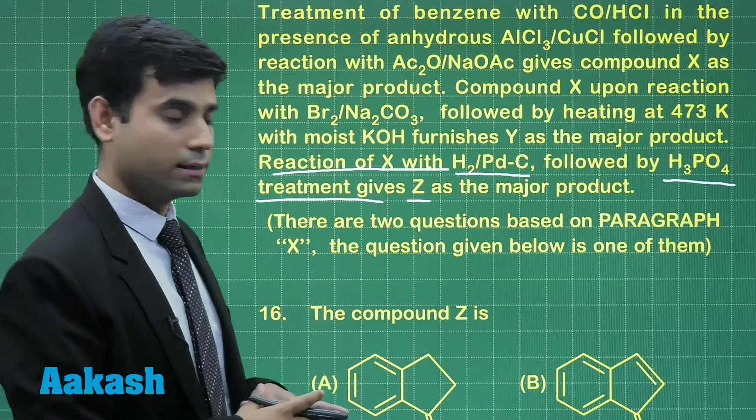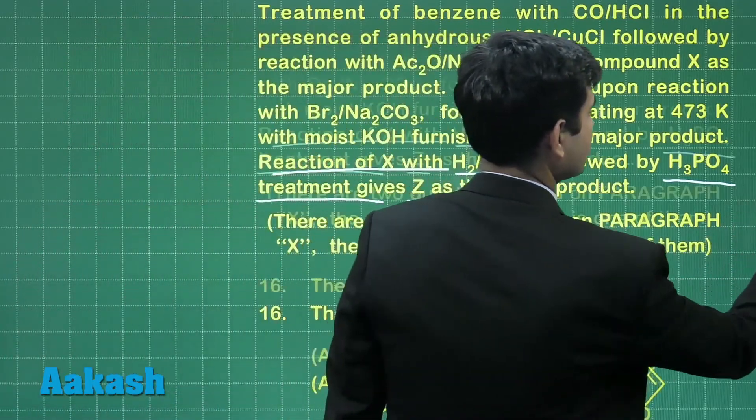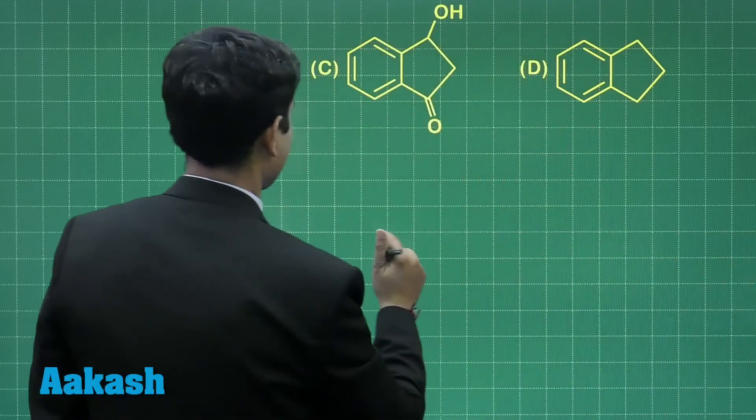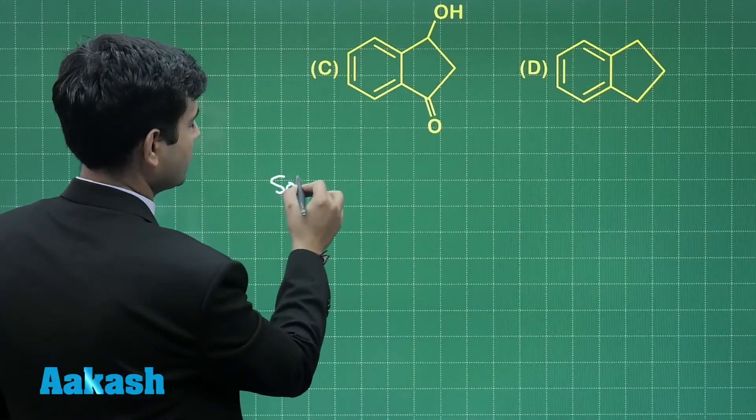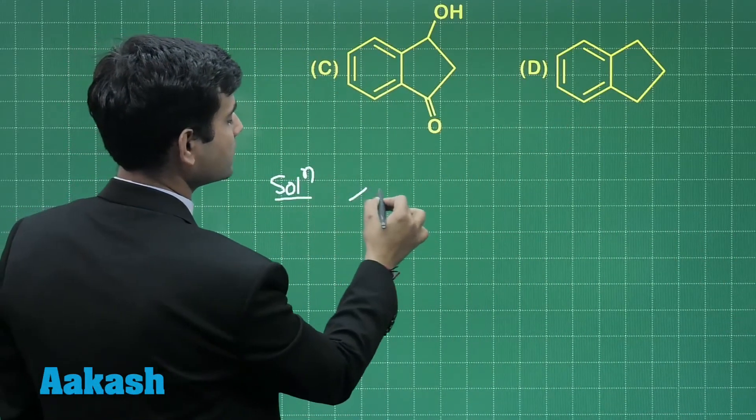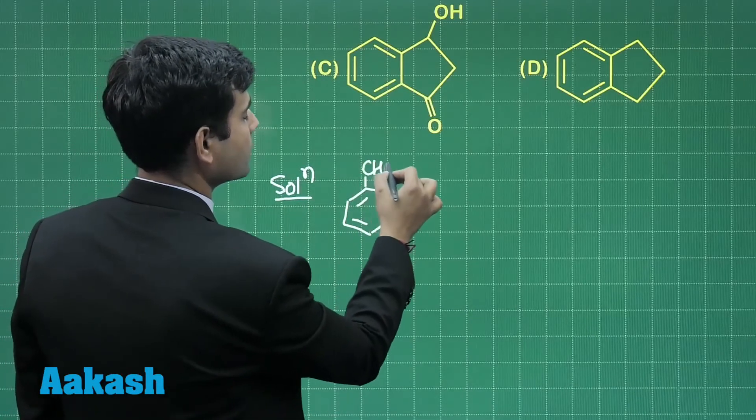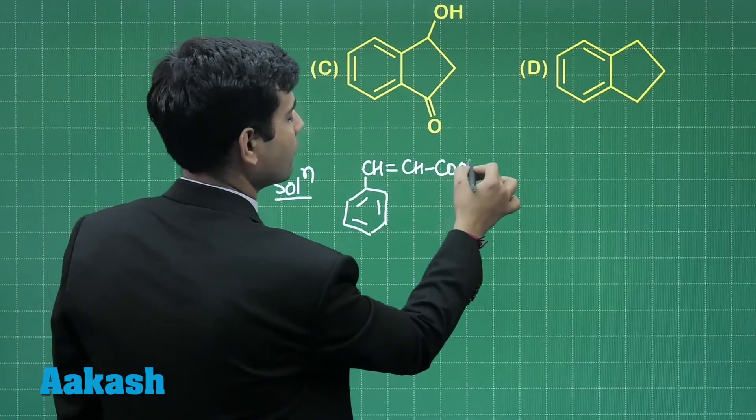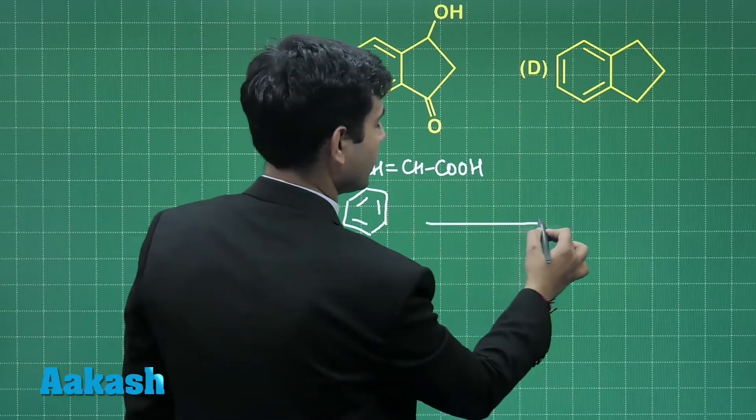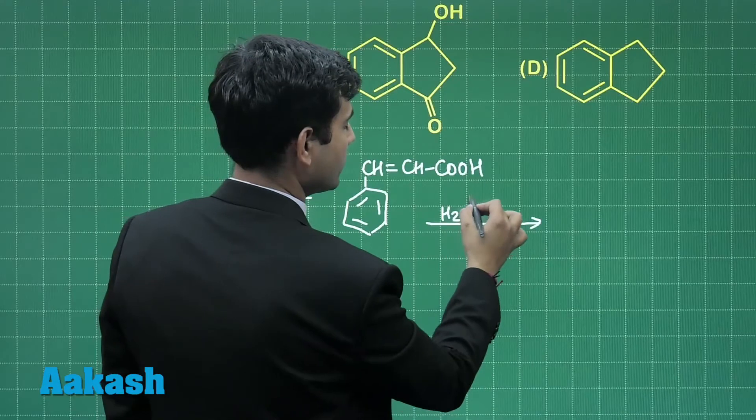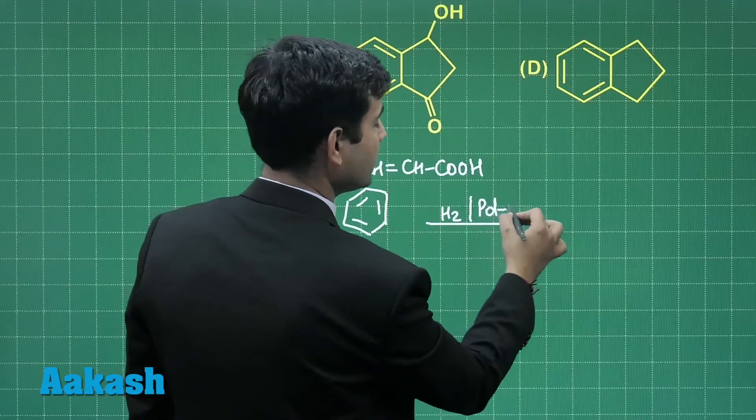Compound X is cinnamic acid. When it reacts with H2 in presence of palladium and carbon, it gives us the reduction product.